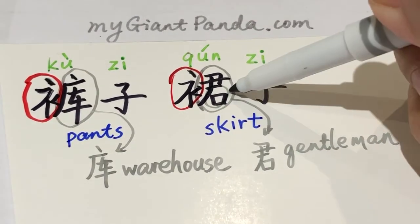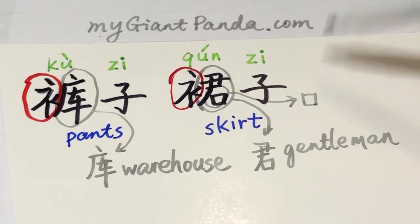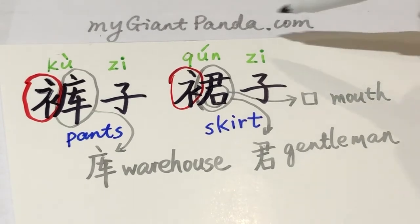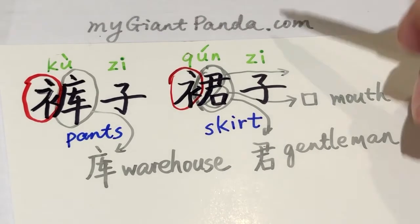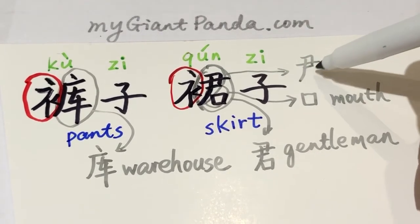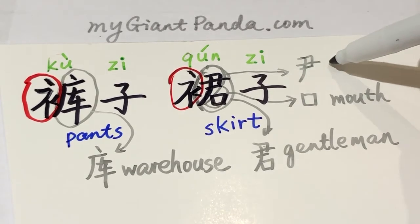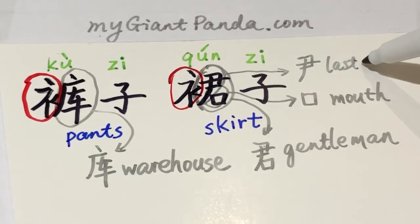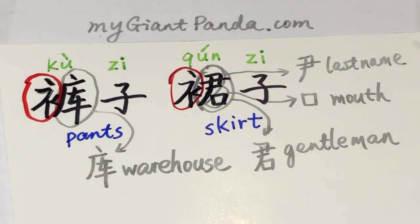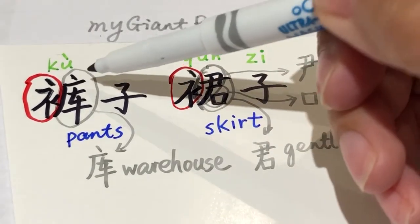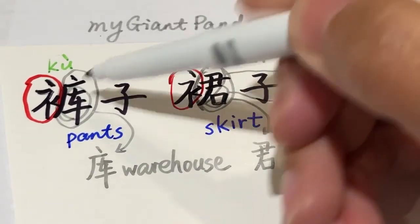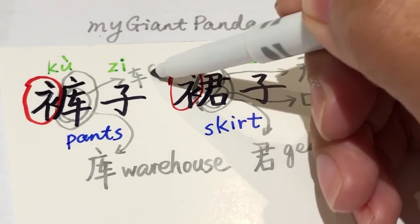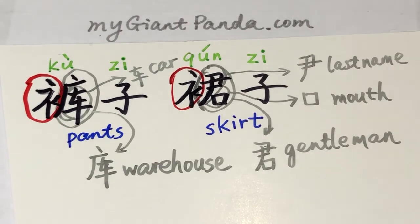拆得更细一点，这是一个口字，门口。上面还有一个尹，姓氏，姓尹，一个姓，是一个中国的last name。当然这边还可以再拆得细一点，是广字头，下面这个是一个车，卡。